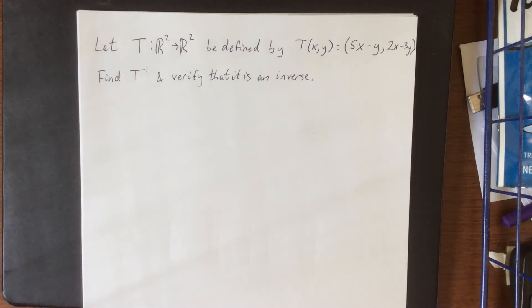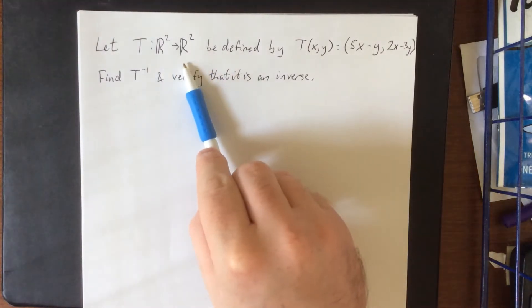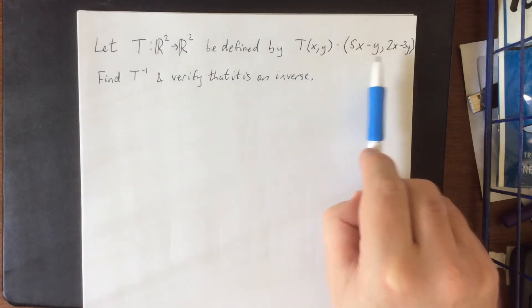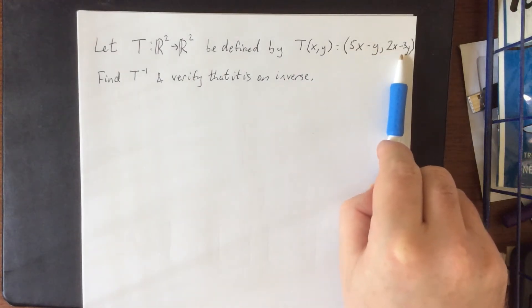In this example, we have been given linear transformation T, taking us from domain R² into codomain R², and it's defined by T(x,y) equals 5x minus y and 2x minus 3y for the two components.